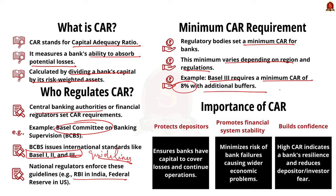The regulatory authorities ensure banks adhere to the minimum CAR, which varies depending on the region and specific regulatory framework. For example, under Basel 3, banks are required to maintain a CAR of at least 8%, with additional buffers for systemic risk and other factors. The primary purpose of CAR is to protect depositors and promote the stability of the financial system. By maintaining adequate capital, banks can handle losses while continuing to operate and provide services.